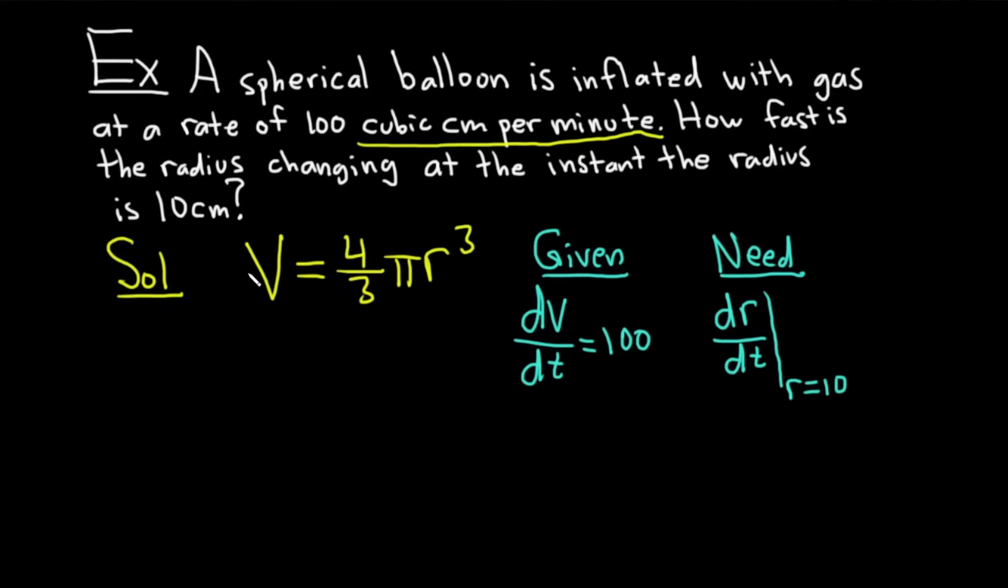We're going to differentiate both sides of the equation V equals 4/3 π r³. So we have dV/dt. The 4/3 and the π are constants. So they hang out. We'll bring down the 3. We have 3 times 4/3. π r squared. And we're using the power rule on r. So we brought down the 3. Subtracted 1 from the exponent times the derivative of the inside. The inside function is r. Its derivative is dr/dt.